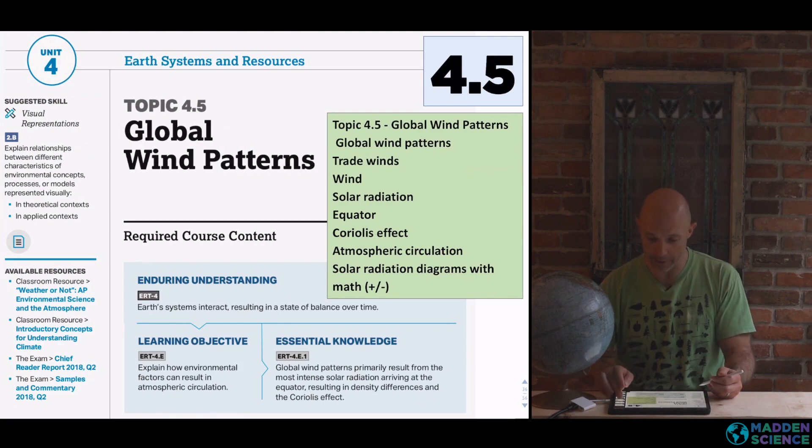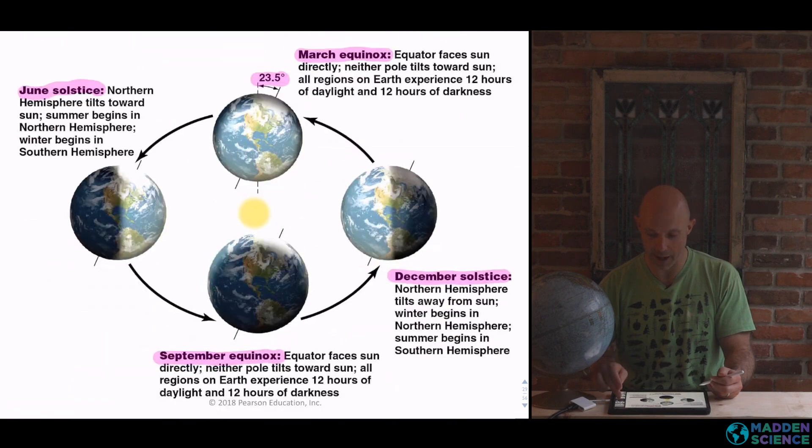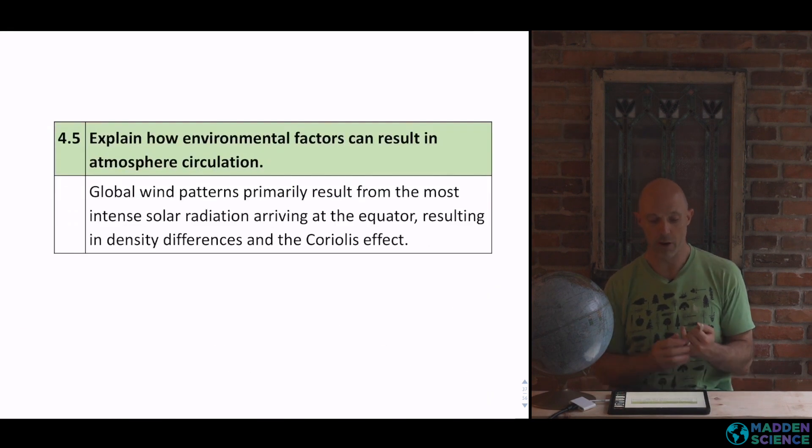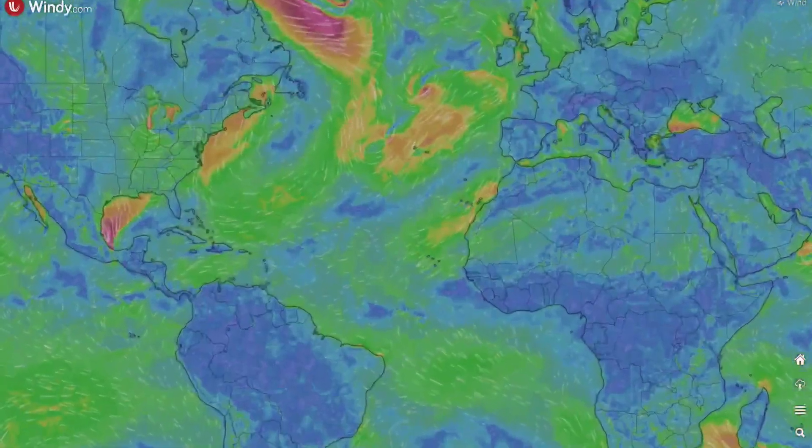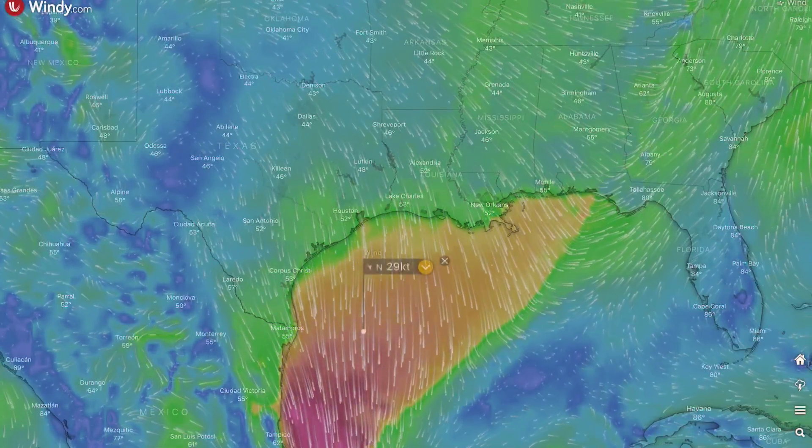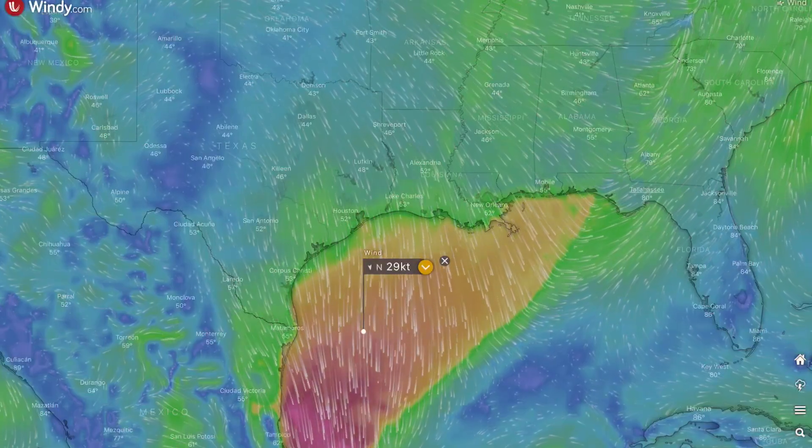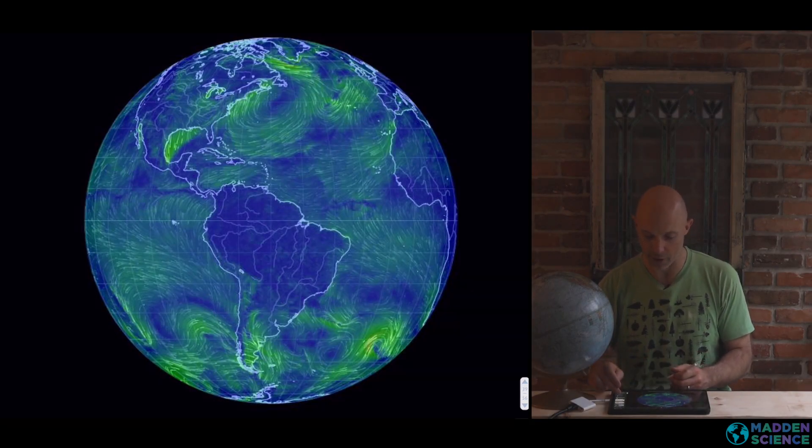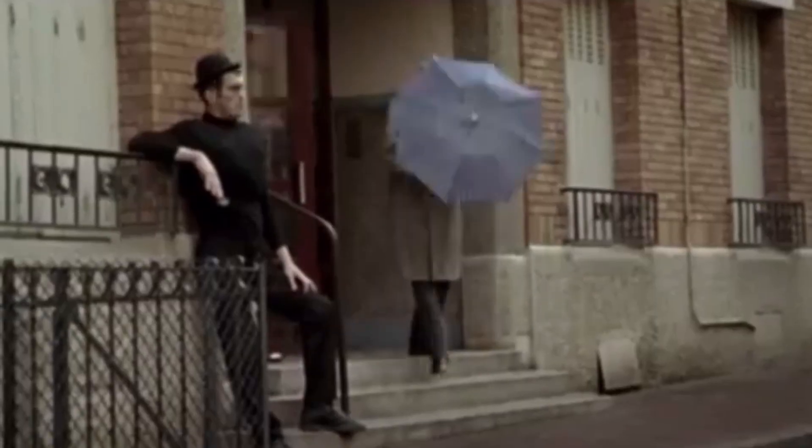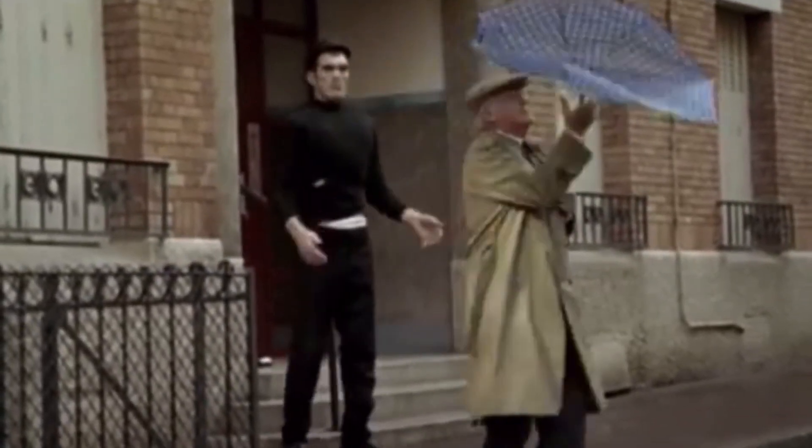All right, global wind patterns. How is it that these ideas and concepts impact global wind patterns, and specifically the Coriolis effect? So we're looking here, how environmental factors can result in atmospheric circulation, and then global wind, primarily the result of most intense solar radiation at the equator. One of my favorite apps or websites is going to be windy.com, shown here. We can also take a really cool look at pressure systems around the globe.